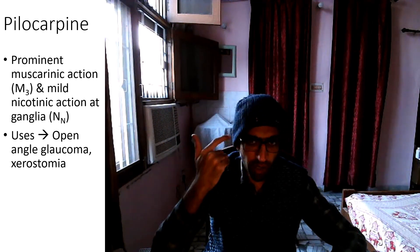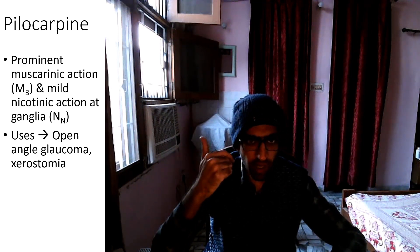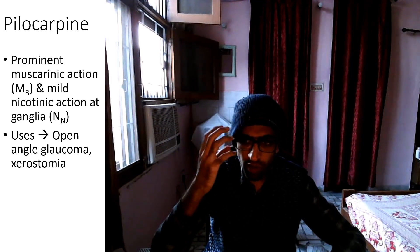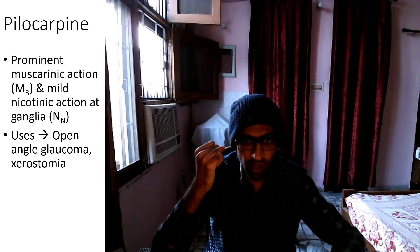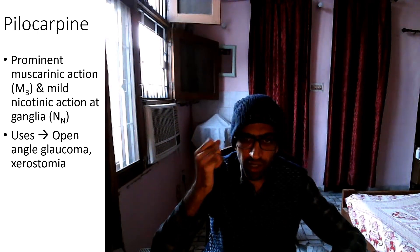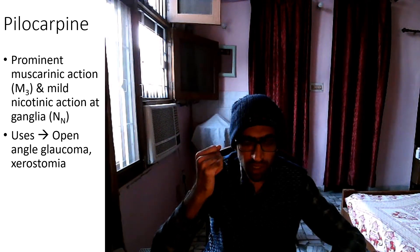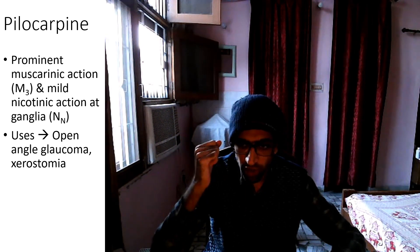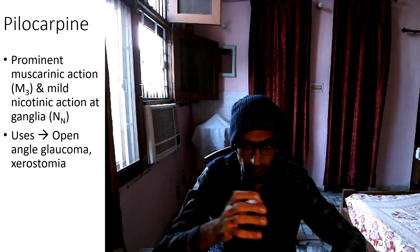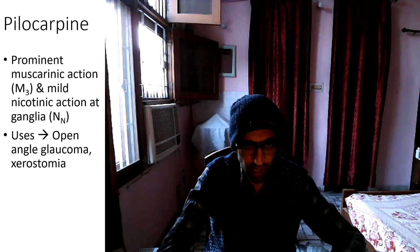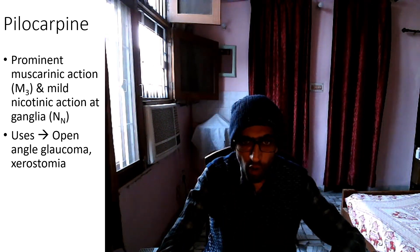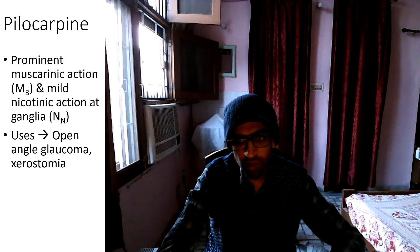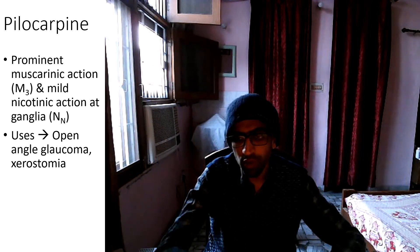In the eye, it penetrates the cornea and goes directly to the pupillary muscle. Ciliary muscle contraction reduces intraocular tension, and the duration of action lasts 4 to 8 hours. It is used in open-angle glaucoma and xerostomia.